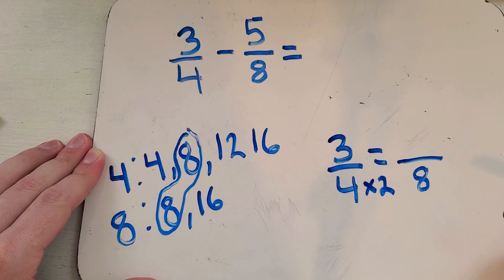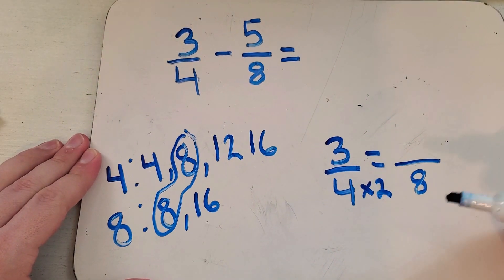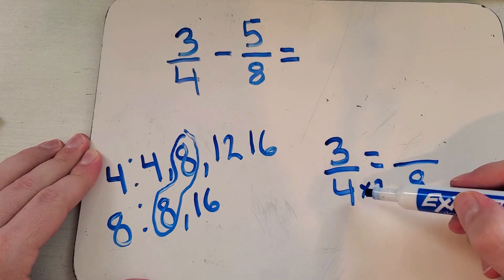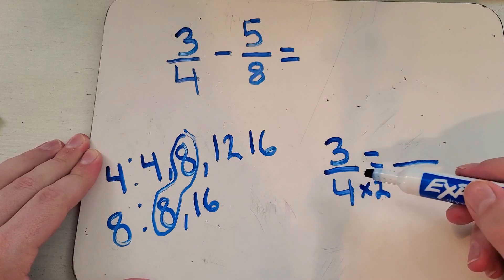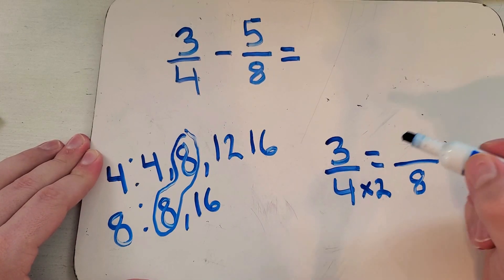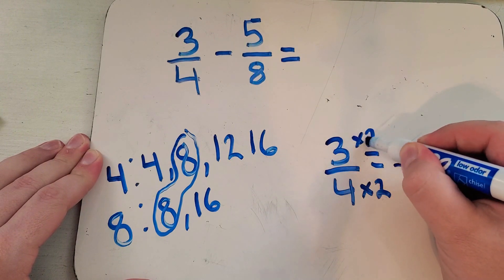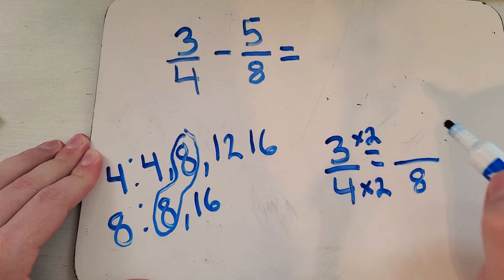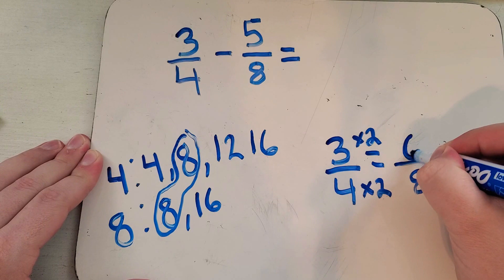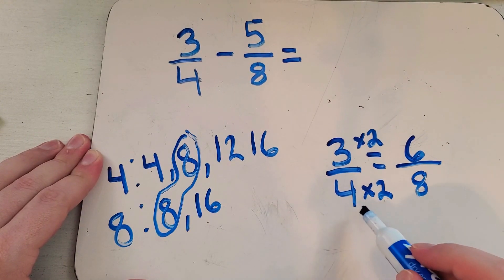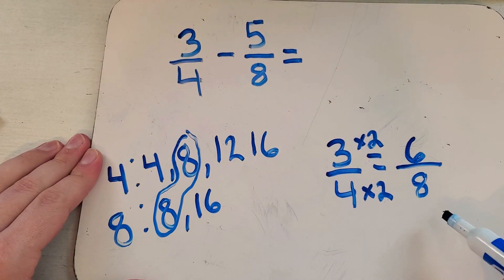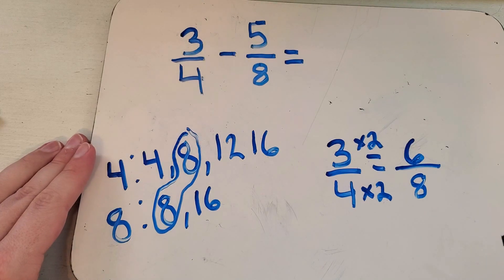Now anytime you do something to the bottom of a fraction problem or the denominator, you also do the exact same thing to the top. So I'm going to say times two - three times two is six. So three fourths is the exact same thing as six eighths.